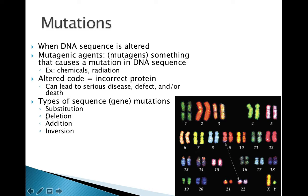A deletion is kind of what you would think — if something's deleted, it's taken out. So if there should be six letters in a code and one of them is removed, now you only have five letters. It's missing a piece of information, and that gene will not be able to do its job because instead of having A, C, T, G, C, A, it's only got five of those letters, so it can't be correct.